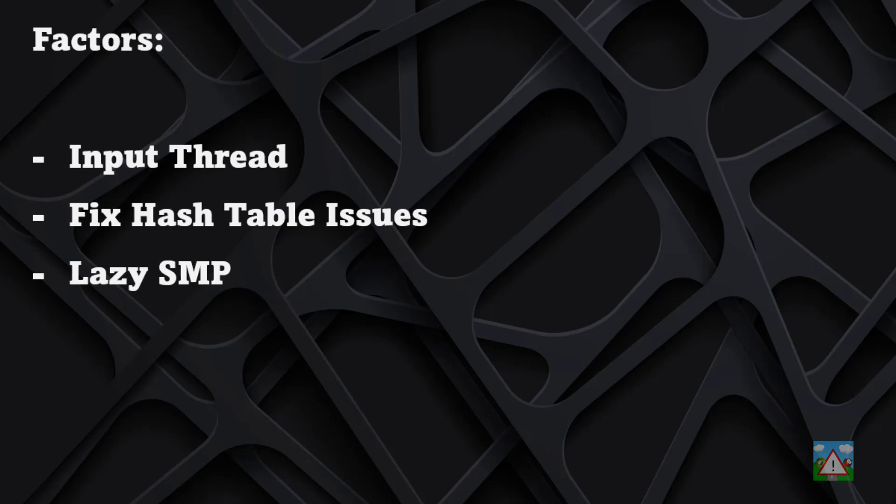Welcome to the 98th video in the series programming a chess engine in C. Now that we've made the small fixes to the engine, we can think more about the main features we want to add in upcoming videos. The two big ones are the input thread and lazy SMP — parallel processing using a shared hash table.